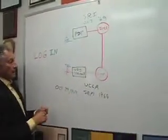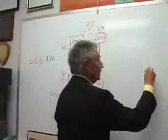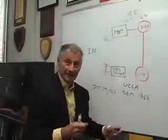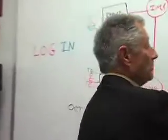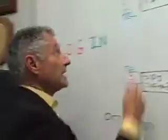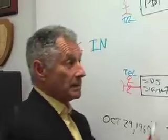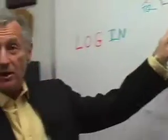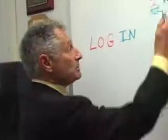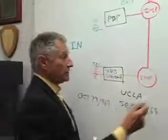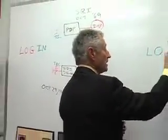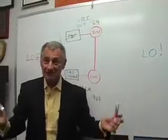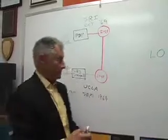What happened is Charlie typed the L and asked, 'You get the L?' The answer was, 'Got the L.' He typed the O. 'You get the O?' 'Got the O.' He typed the G. 'You get the G?' Wacko — the system crashed. This machine went down. So the very first message on the internet ever was 'Lo,' as in lo and behold. You couldn't ask for a better, more effective message.